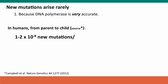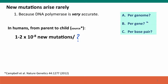Here's a number: in humans, from parents to child, there are about 1 to 2 times 10 to the minus 8th new mutations — but I've left off the units. So what do you think the units are? 1 to 2 times 10 to the minus 8th new mutations per what? Per genome? Per gene? Per base pair? In fact, it's new mutations per base pair.